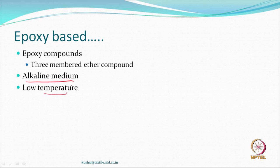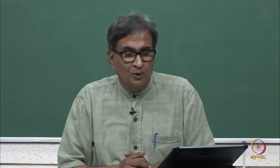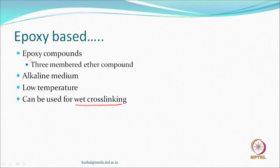People have used epoxy compounds for wet cross-linking also. Wet cross-linking means that the fabric is wet. Another option is pad-dry-cure where the fabric is padded, dried, and then cured. Other is wet cross-linking when the fabric is actually in the solution. Today, people are talking about the middle path, which is called moist cross-linking. We are looking at the epoxy compounds which can be used for cross-linking, and obviously these compounds have no formaldehyde.